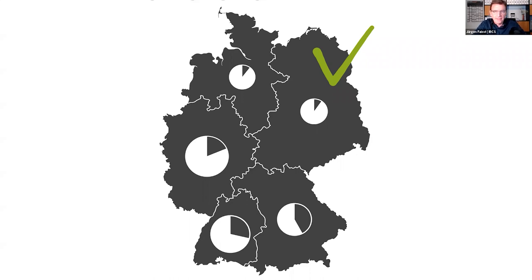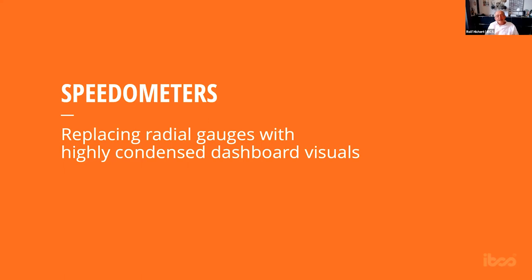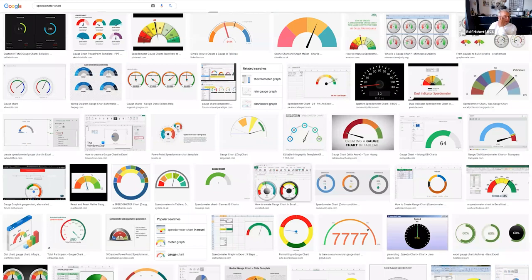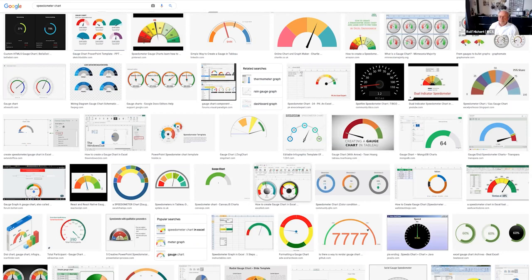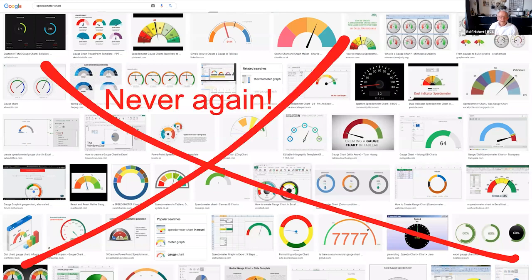Is it only pie charts that have the problem with information density, or are there more chart types where we can do better? The worst ones are speedometers. They are really something — speedometers are not made to display data. They are analog systems we might use in a car. And it's even worse — probably the most popular tool out there is Power BI, and if you look at those Power BI dashboards, it looks like Power BI even pushes the use of radar charts. I think it is a stupid solution, of no use.